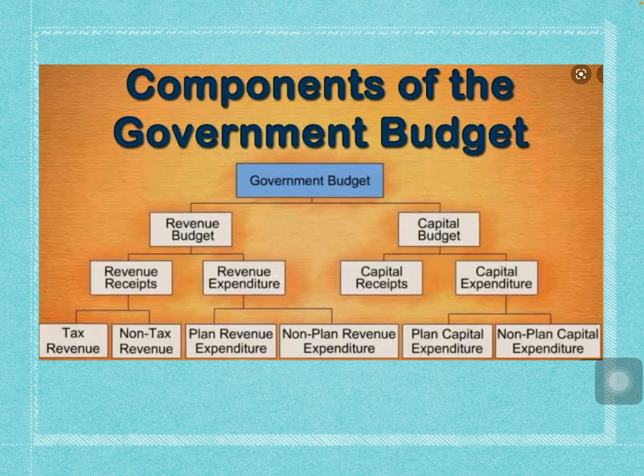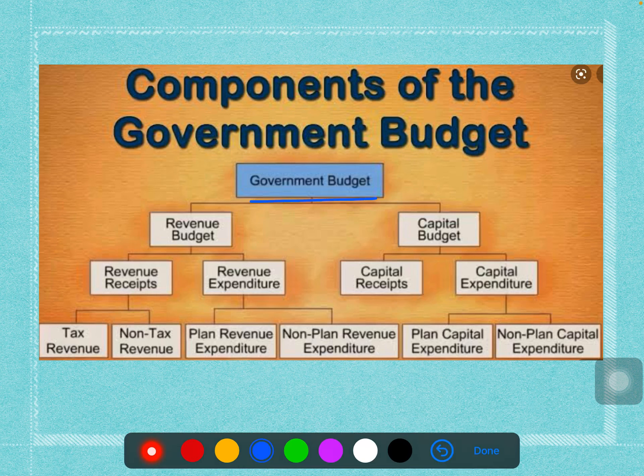The question demands only the chart of a government budget. The government budget can be classified into two different ways: revenue budget and capital budget.